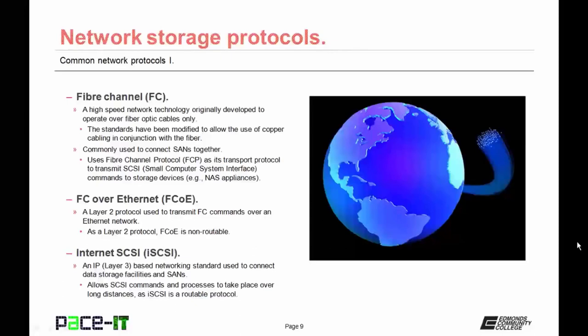Then we have FC over Ethernet, or FCoE — a layer 2 protocol used to transmit FC commands over an Ethernet network. As a layer 2 protocol, FCoE is non-routable. And finally, we have Internet SCSI, or iSCSI. It's an IP-based network standard used to connect data storage facilities and storage-attached networks. It is a layer 3 protocol that allows SCSI commands and processes to take place over long distance, as iSCSI is a routable protocol.